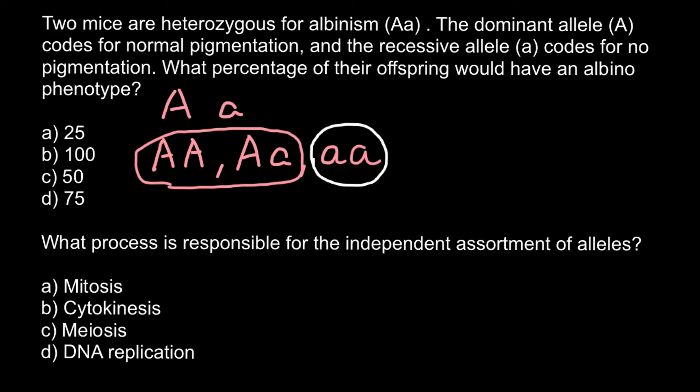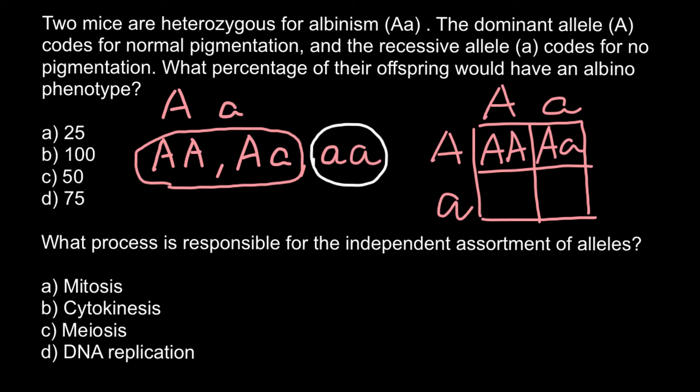When we have two parents that are both heterozygous, we can build a Punnett square to predict the frequency of genotypes and phenotypes in the progeny. Here we would have AA, Aa here, Aa here, and aa here.